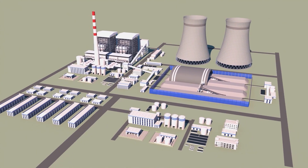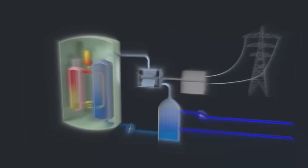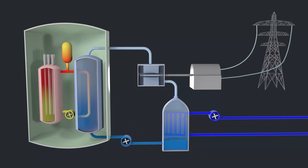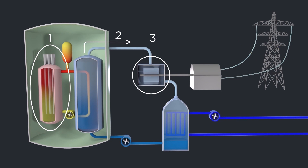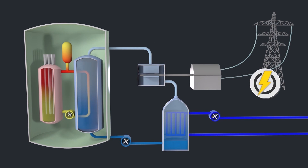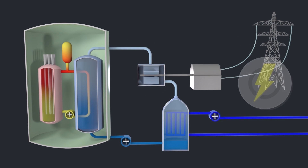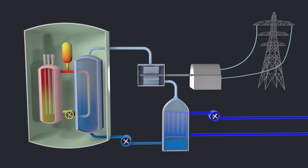This is also true for power plants. Boiling water reactors use the heat from the reactor core to convert water into steam, which then spins turbines to provide energy. The water in the core is used to maintain the optimum core temperature and ensure that the chain reaction continues to produce energy.